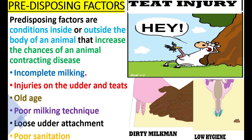Predisposing factors are conditions inside or outside the body of an animal that increase the chances of the animal contracting disease. These include incomplete milking, injuries on the udder and teats, old age, poor milking technique, loose udder attachment, and poor sanitation.